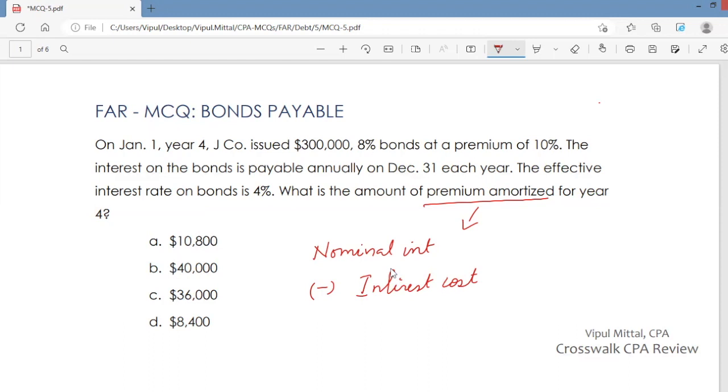And how do you calculate this? Nominal interest is easy to calculate. This is the amount of interest that you pay. So, stated interest rate is 8%. You multiply this with $300,000. So, this is the amount of interest that you pay. This is your nominal interest. What is your interest cost for year 4?